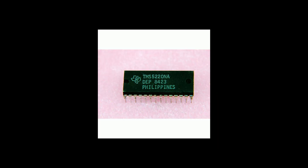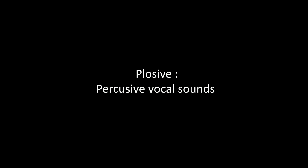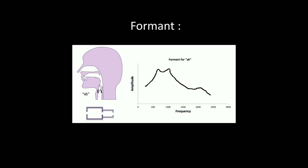Simply put, LPC analyzes a voice using different properties. These properties include frequency — how high or low the voice is in pitch — volume — how loud or soft the voice is — plosives, which are basically noise sounds, and formants, which are basically different vowels created by the voice. The vocal cords form the pitch, which is replicated by an oscillator, or a tone generator.